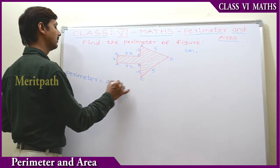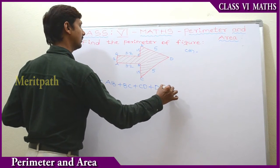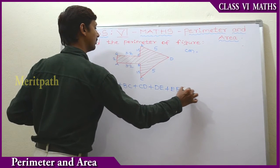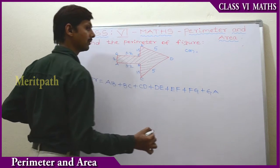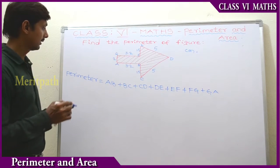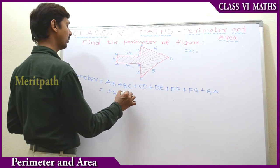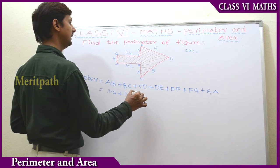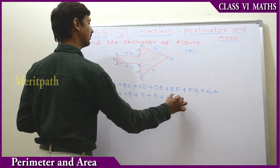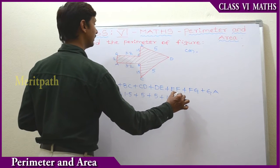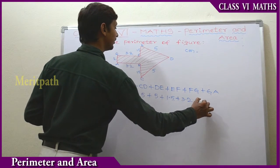Let's add AB + BC + CD + DE + EF + FG + GA. These are the sides of this figure. AB is 3.2, BC is 1.5, CD is 5, DE is 5, EF is 1.5, FG is 3.2, and GA is 2 centimetres.